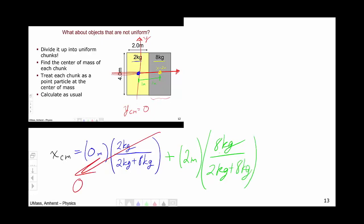we have a value of two meters and a weight of eight kilograms over two kilograms plus eight kilograms. Again, we have a zero, which gives us a center of mass in x of two meters times eight kilograms over ten kilograms.